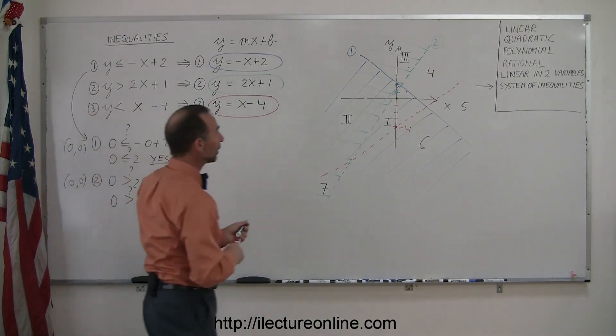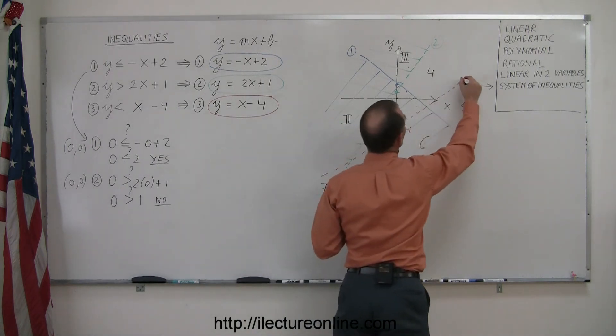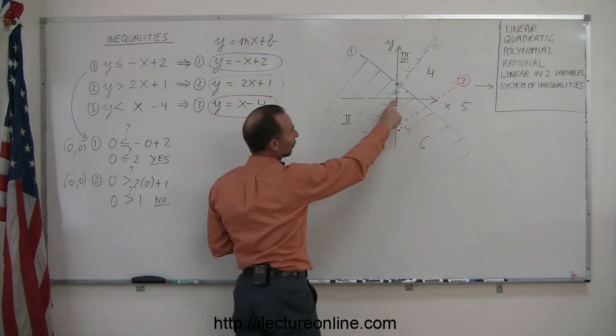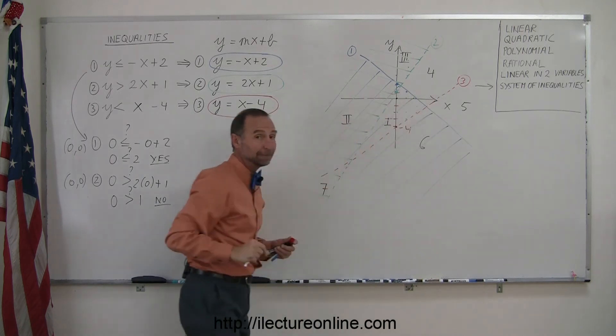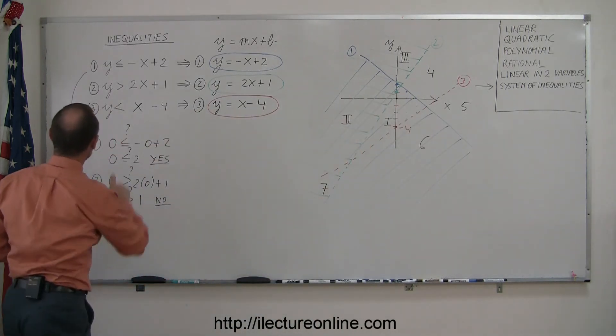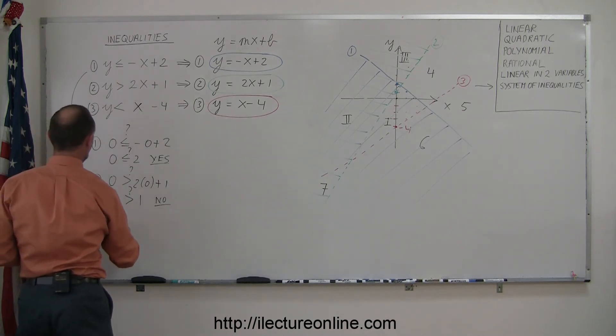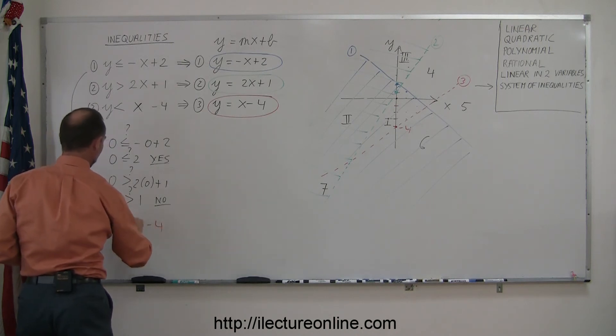Now I go to my third inequality, and let me write the number 3 here, that's the third line. You can see that the point (0, 0) lies to the left of that line. Plugging that into my third inequality, and let me use red so you can see it. So, we have 0 is less than 0 minus 4, question mark.